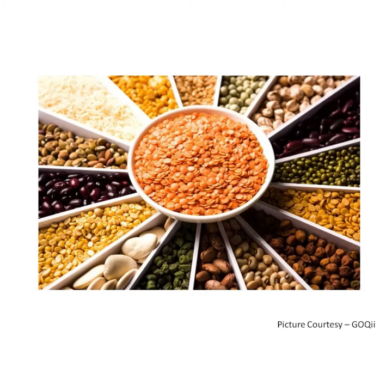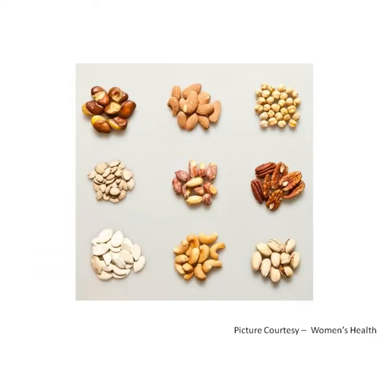We also get pulses like kidney beans, green grams, chickpeas from plants. We get nuts like almonds, cashews, walnuts from plants.